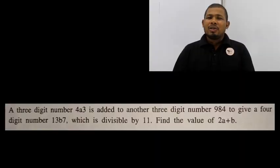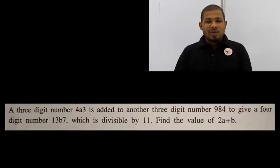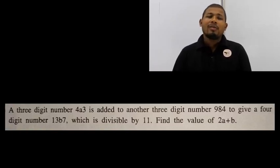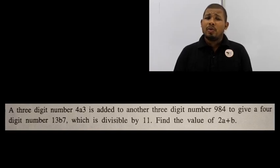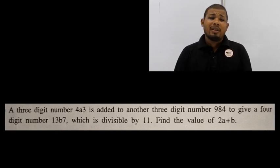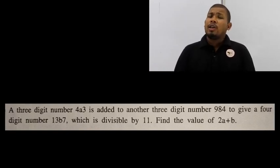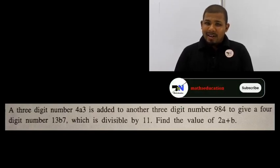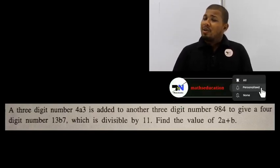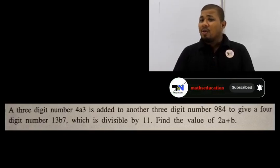Welcome to the Mathematics Olympiad 2018. In 2018, the category involves numbers 4A3? and 984. This is 13B7. Now, if you apply the condition of this problem, you will need to solve this problem.